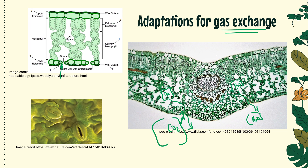Plants can actually close their stomata should they be losing too much water. When it's super hot, dry, or at night when CO2 isn't needed for photosynthesis, special cells called guard cells close off the stomata. When closed, the guard cells press together. When open, the guard cells actually swell, becoming rigid, which causes them to open up — allowing CO2 in, O2 out, and also some water vapor out.